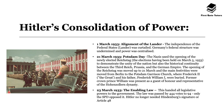On 23rd March 1933, the enabling law was passed, which handed all legislative powers to the government. This law was passed by 444 votes to only 94 which were opposed, and really it was only the SPD — who were formerly the leaders of government — that opposed it. Hitler no longer needed Hindenburg's signature or Article 48; he was now free as a result of this enabling law to do as he pleased as the Führer.